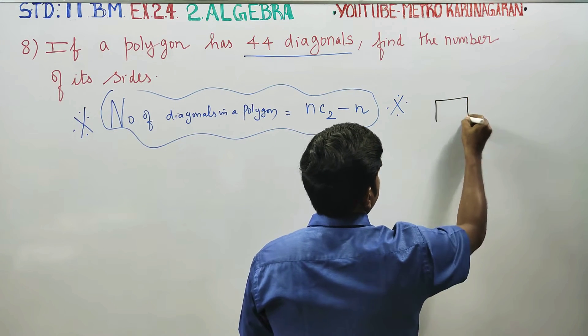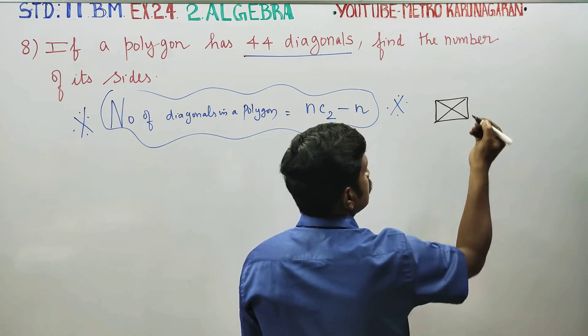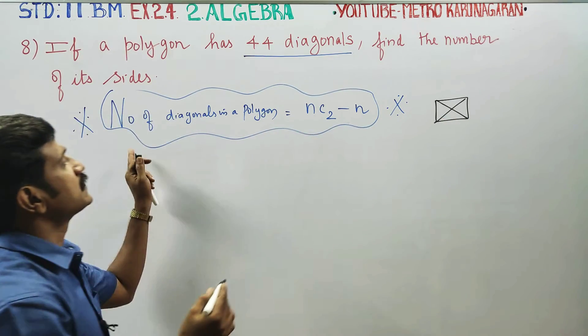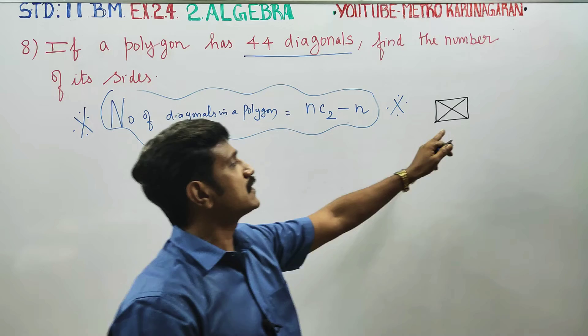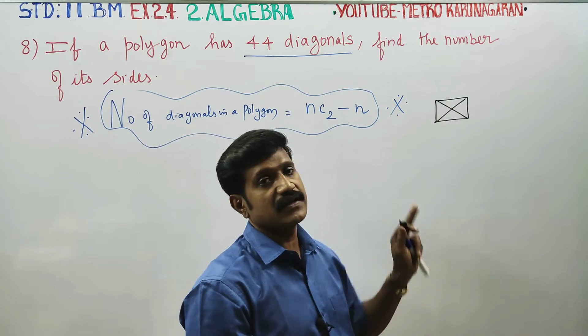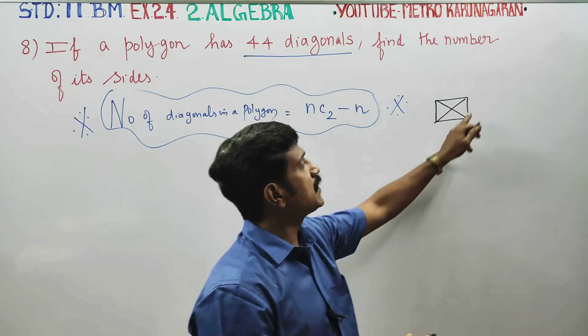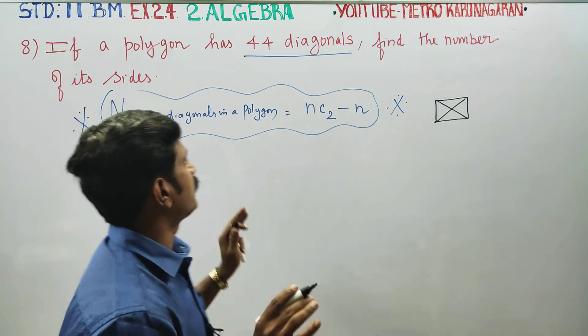If you have a square, you will have 2 diagonals. More sides means more diagonals.